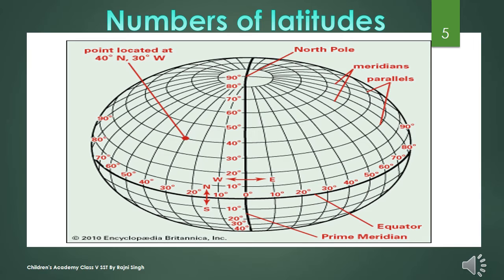All parallels are full circles, except at the north pole and south pole which look like points. You can see in the image that the north pole and south pole appear as just a point. The length of the parallels keeps decreasing as we move from the equator toward the poles — you can also see in the image that as we move from the equator to the north pole, the parallels decrease in their lengths.